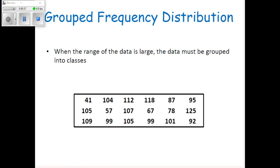Now for the group frequency distribution. After making the ungrouped frequency distribution — which was very simple, where we just organized marks with frequencies and tallies — this is the frequency distribution for grouped data.